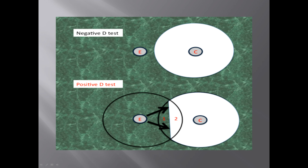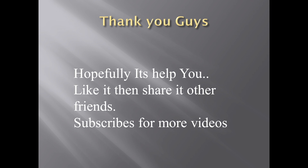So hopefully it's easy to remember: C comes before D in the D-test — C is clindamycin, which is considered sensitive; E comes after, which is erythromycin, which is resistant. If you find D-formation, that's a positive D-test. Hopefully this helps you guys. Thank you very much. If you liked it, share it with friends who have difficulty remembering, and subscribe for more videos.